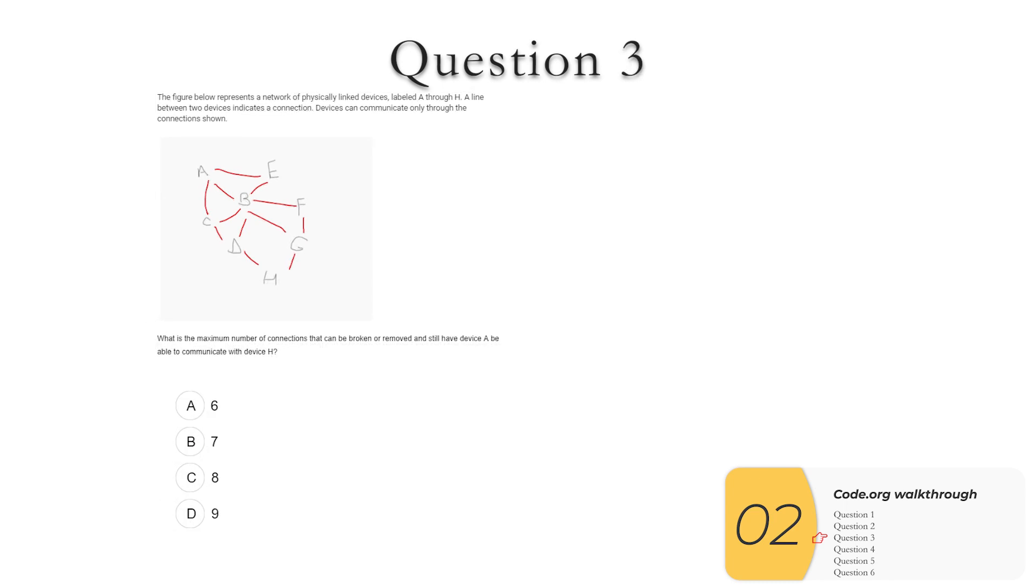Alright, question three. It's asking me for the maximum number of connections I can break and still have communications between A and H. So it's kind of the opposite of the previous problem. So I'll find the shortest path from A to H, wipe out all the other ones, count them up, and there's my answer. My answer is nine.